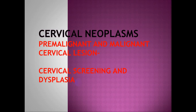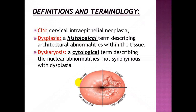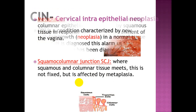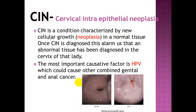Cervical neoplasm includes premalignant and malignant cervical lesions. Cervical intraepithelial neoplasia: dysplasia is a histological term describing organizational abnormalities within the tissue, while dyskaryosis is a cytological term describing nuclear abnormalities — these are not synonymous with dysplasia. Metaplasia is the physiological process whereby columnar epithelium is replaced by squamous tissue in response to the acid environment of the vagina. The squamocolumnar junction where squamous and columnar tissue meets is not fixed but is affected by multiple factors.